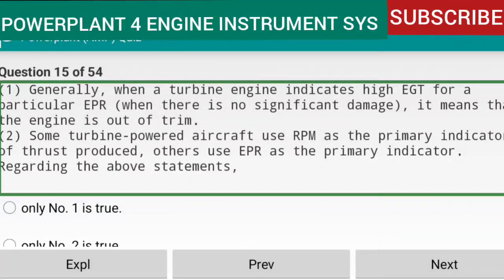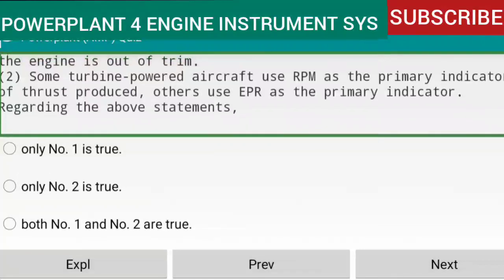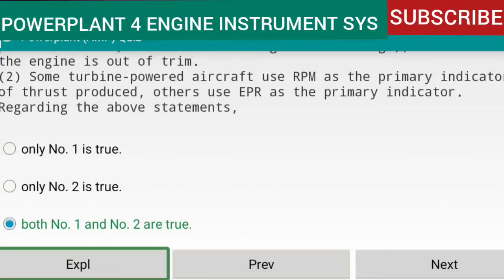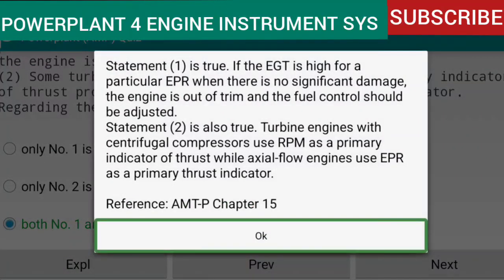Question 15 of 54: Both statements are true. Statement one: when a turbine engine indicates high EGT for a particular EPR with no significant damage, it means the engine is out of trim and the fuel control should be adjusted. Statement two: turbine engines with centrifugal compressors use RPM as the primary indicator of thrust, while axial-flow engines use EPR as the primary thrust indicator. Reference: AMTP Chapter 15.